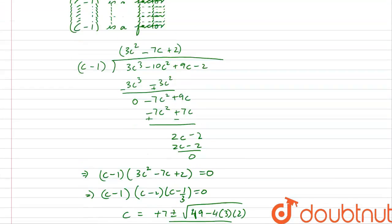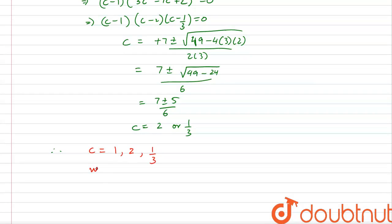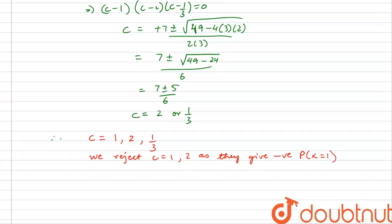Not all values satisfy the probability constraints. If c = 1, the probability P(x=1) = 4c - 10c² becomes negative, so c=1 is rejected. If c = 2, we get 8 - 40, which is again negative. We cannot have negative probabilities, so c=2 is also rejected. Therefore, the only valid value is c = 1/3.